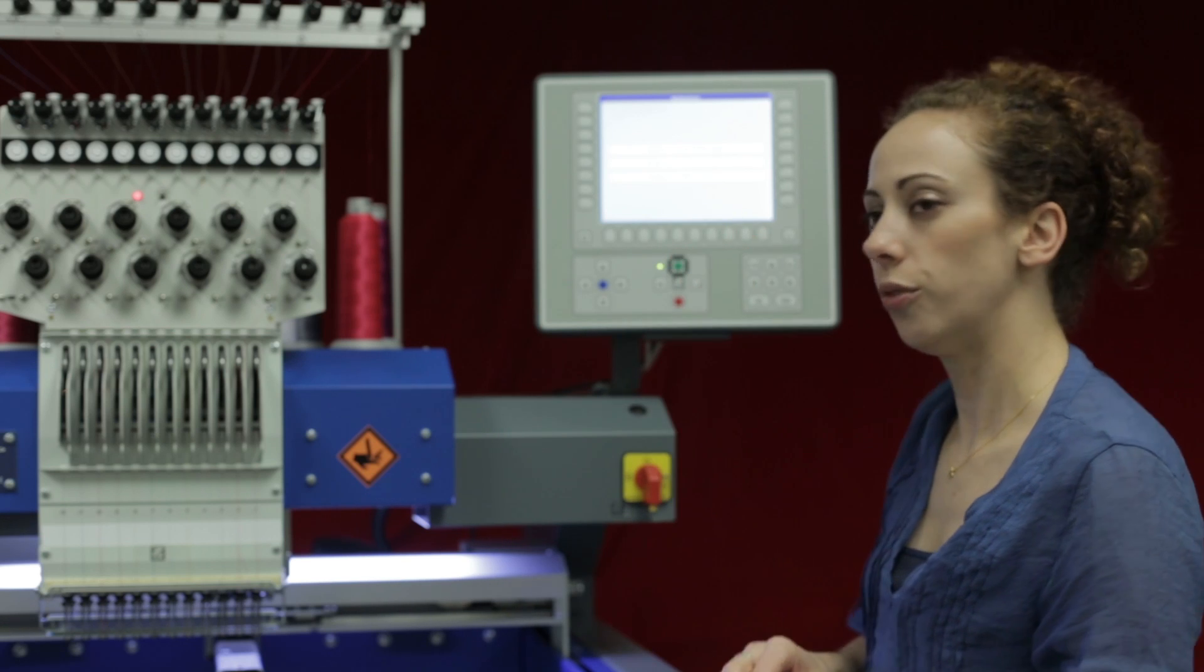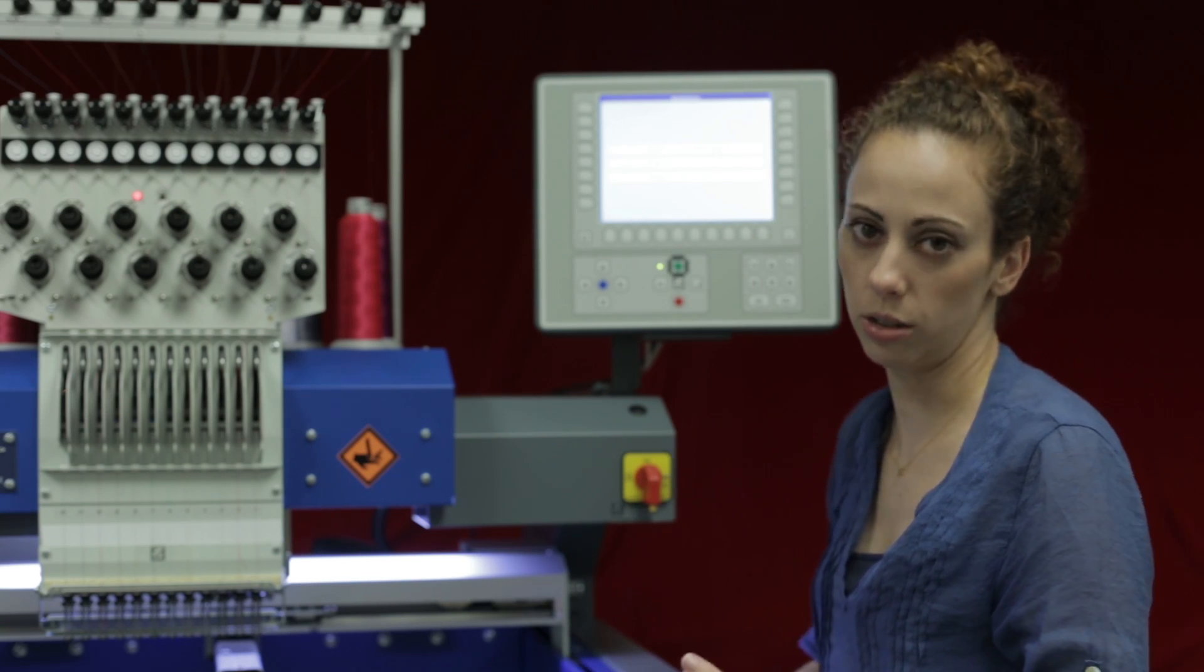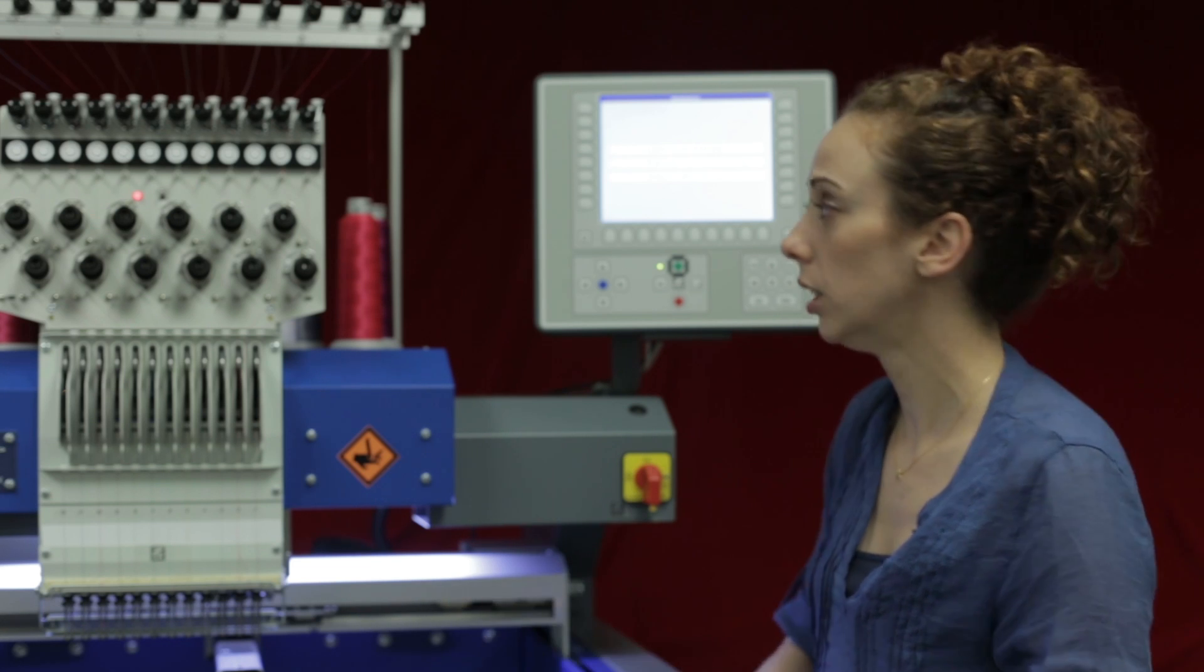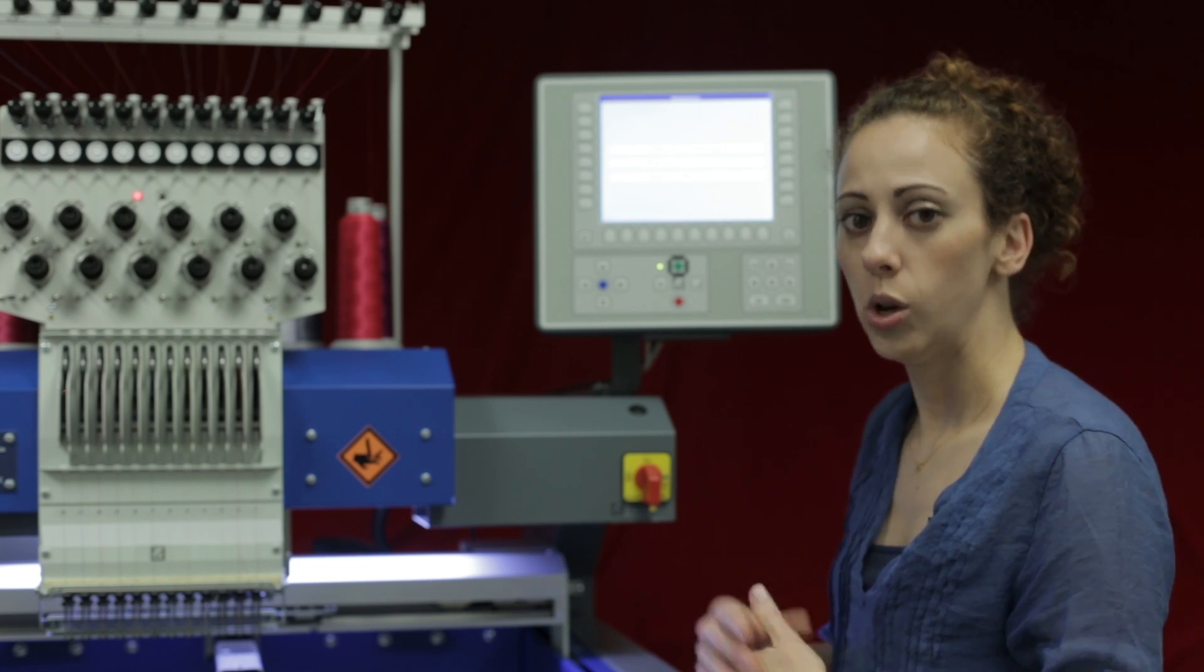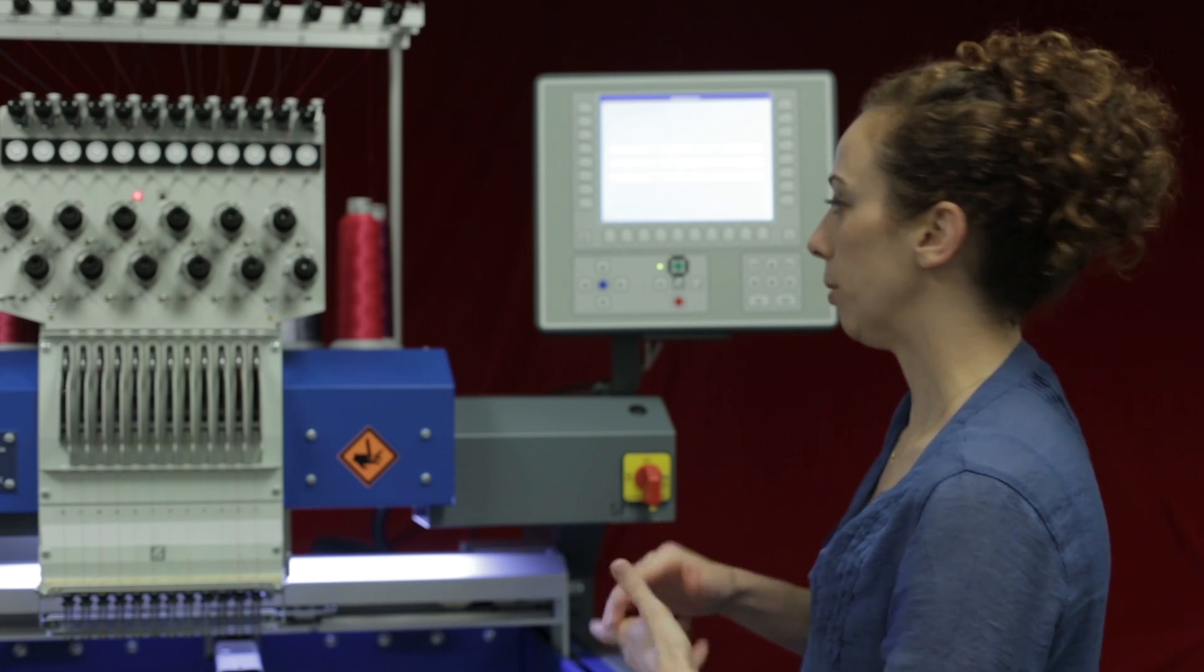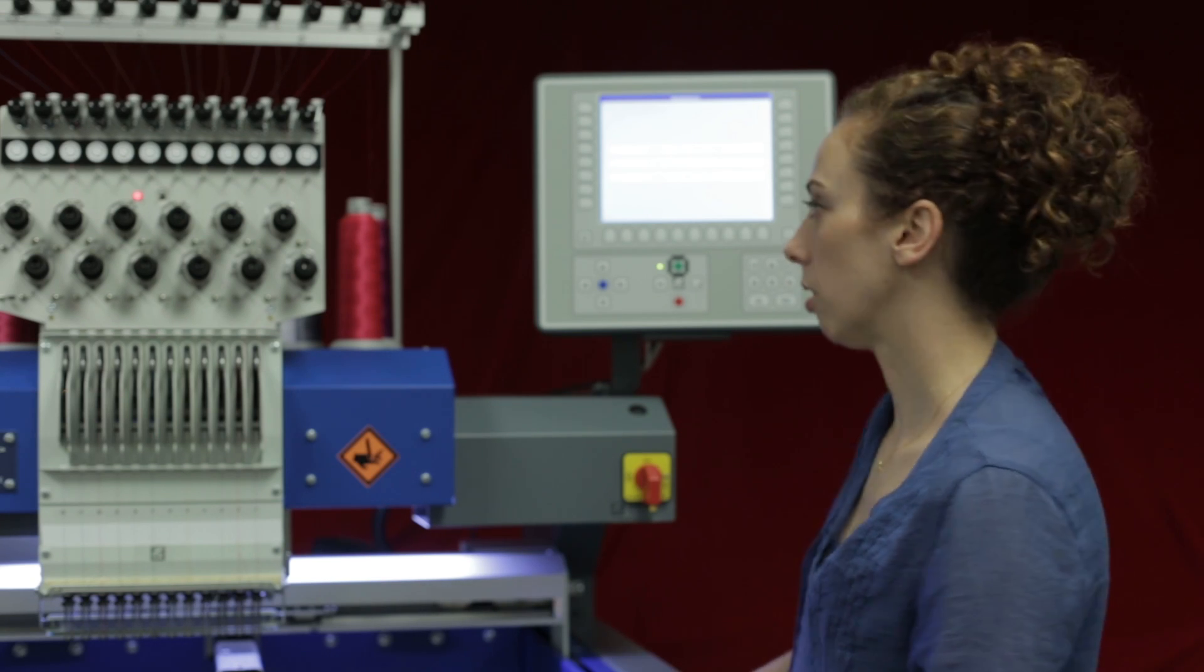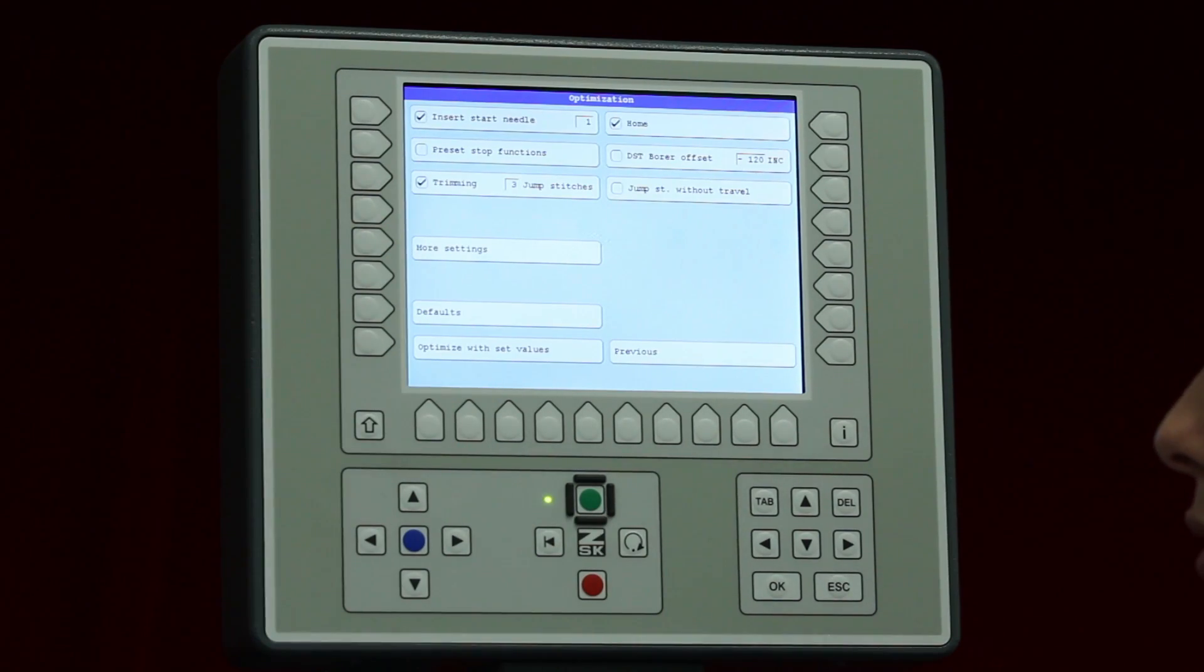Typically, the optimization with default values you will do with a transport code file or a Z00 or ZOO file. Optimize with user-defined values is typically what we do with a DST file. So I would like to change the needle stops in here than what I had before, so I'll go ahead and click on optimize with user-defined values.